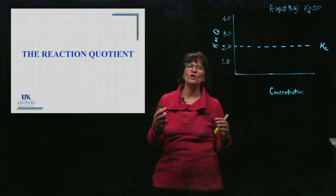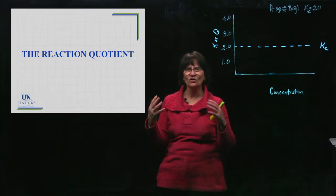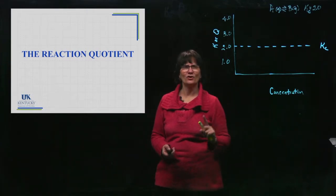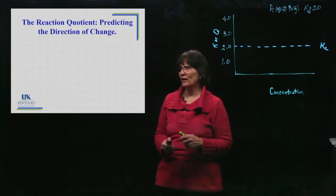So it's going to shift, it's going to either produce products or reactants, it's going to go one way or the other until finally it gets to equilibrium and it gets to K. So K is the target. Q is where it is right now.